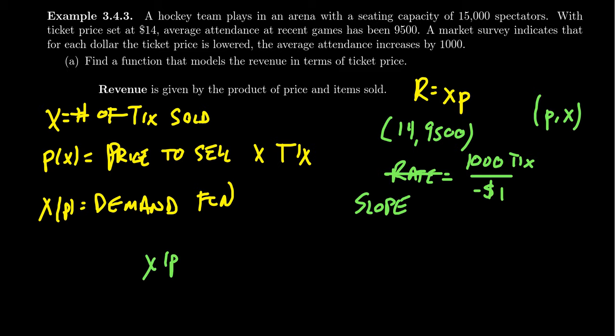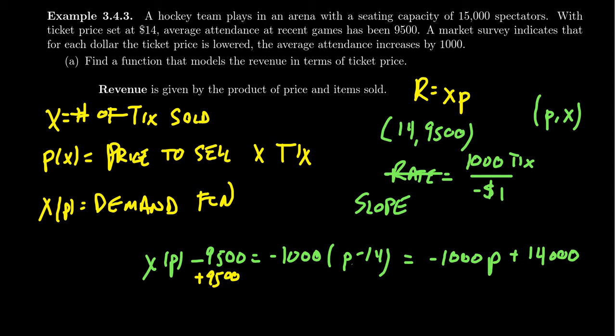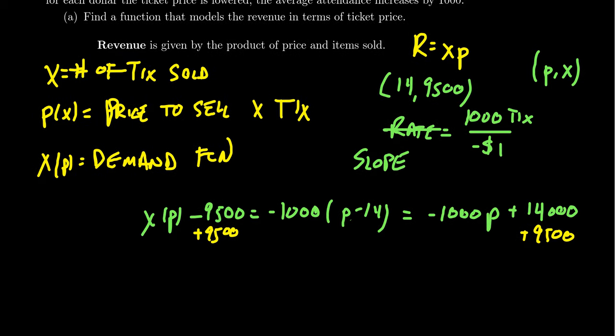So then our demand function, X of P, if we think of it in terms of slope as a line, we actually would get that X of P minus 9,500 is equal to negative 1,000, and that's our slope, times X minus 14. And so then we can distribute the negative 1,000. We get negative 1,000 here. Oh, and that shouldn't be an X. That should be a P. Sorry about that. Just used to writing X as my input variable. It's a P there. So we get negative 1,000 P plus 14,000, like so. And then we're going to add the 9,500 to both sides.